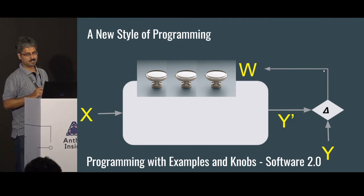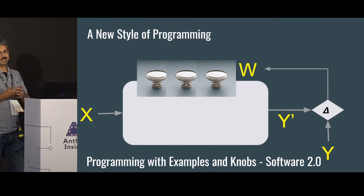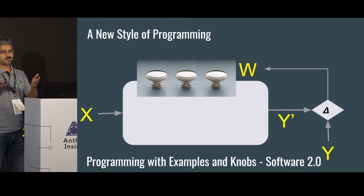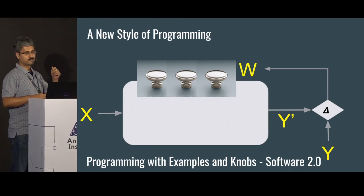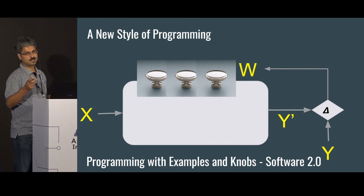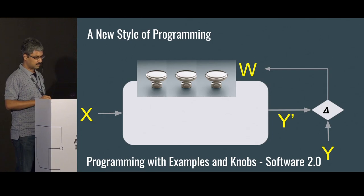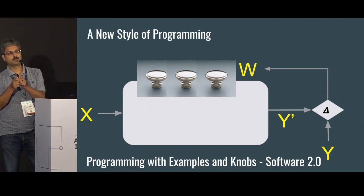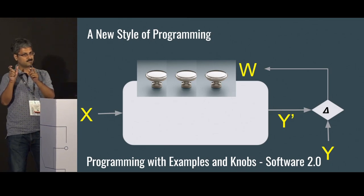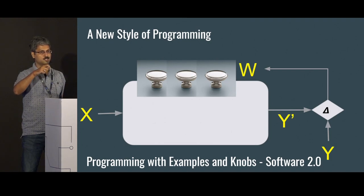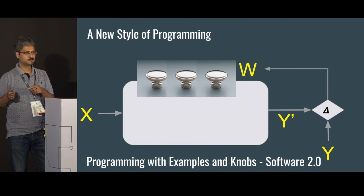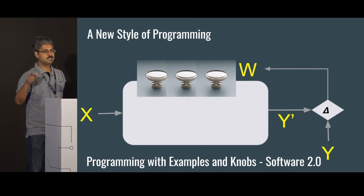It's a new style of programming. We call it programming with examples and knobs. The loop is: you have examples x and y, a black box guesses the output y', and there's a diff engine delta. The diff engine tries to make the guessed output y' similar to y. If there's a difference, it goes back and turns these knobs so that the next guess y' will be close to y. So there is this learning loop.